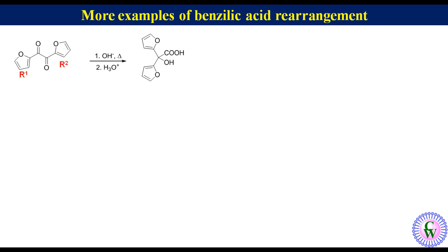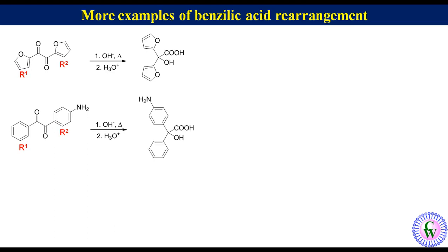Next example: 1-(4-aminophenyl)-2-phenyl ethane-1,2-dione. Here R1 is phenyl and R2 is aminophenyl. So the product formed after benzylic acid rearrangement will have a carbon attached to aminophenyl, phenyl, a hydroxyl group, and a carboxylic group.